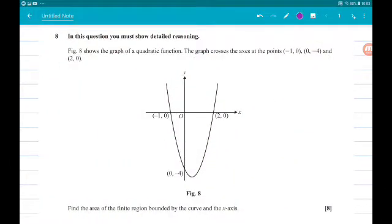Okay, question 8. We have a nice 8 marker. So figure 8 shows the graph of a quadratic function. The graph crosses the axes at the points minus 1, 0, 0, minus 4, and 2, 0. Our job is to find the area of the finite region bounded by the curve and the x-axis.